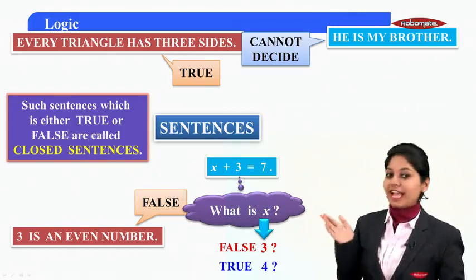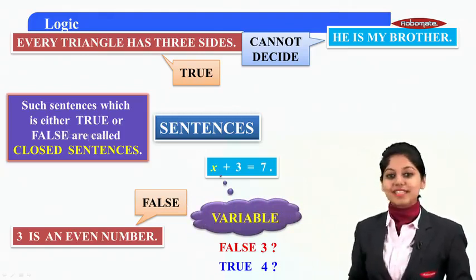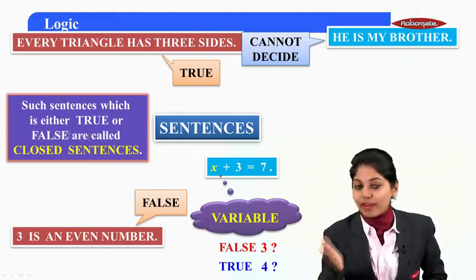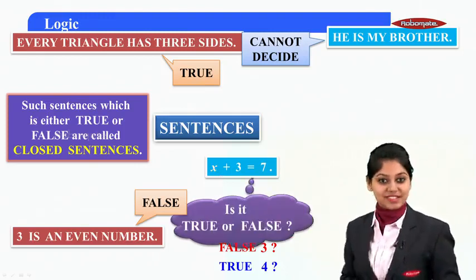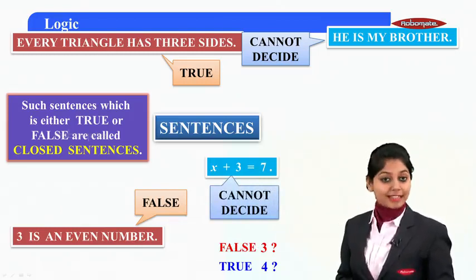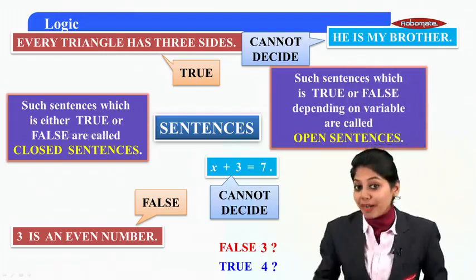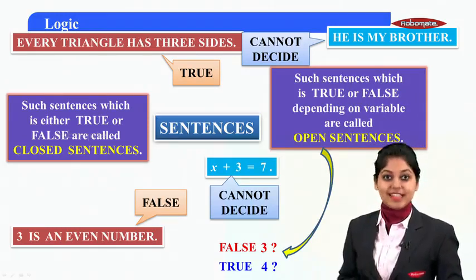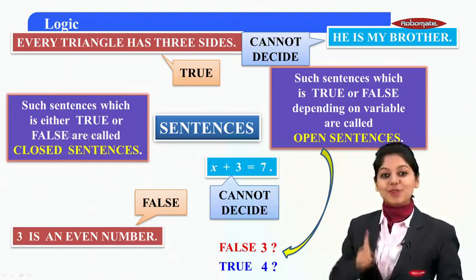So you cannot state a fixed truth value. X is a variable — x changes its value, and according to that value the sentence can be true or false. What is similar between these two sentences? They are both true or false depending on the variable. And such sentences are called open sentences — sentences which are true or false for different values of a variable.